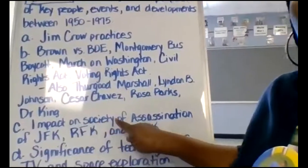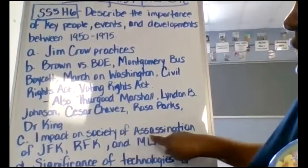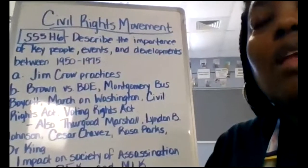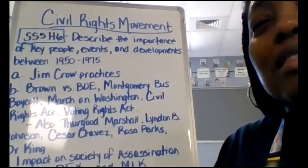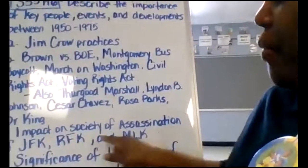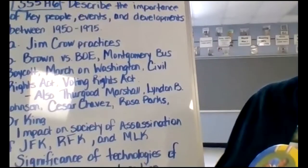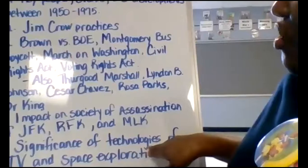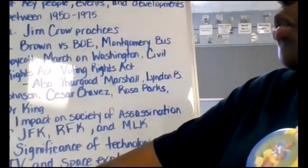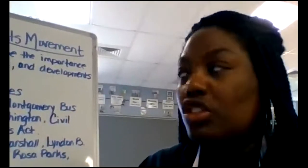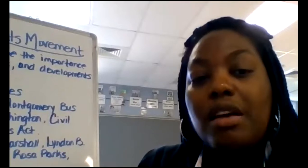C is the impact on society of the assassination of John F. Kennedy. He was in a parade in Dallas, Texas, and was shot during the parade. Robert F. Kennedy, his brother, was also assassinated. Dr. King was assassinated on the balcony of the hotel he was staying in. D is the significance of technologies of TV and space exploration — that's what we're going to look at today, the emphasis of TV and space exploration. We're also going to look at affirmative action.